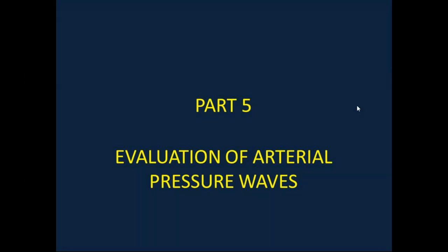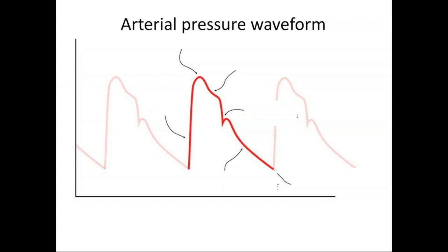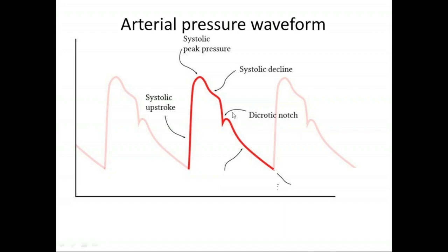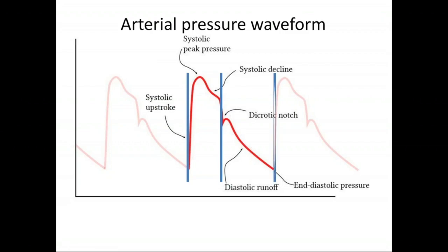Part 5 discusses evaluation of arterial pressure waveforms. The arterial pressure waveform is divided into systolic and diastolic parts. The systolic part has three components: the systolic upstroke, the systolic peak pressure — which is the highest number you can see on the screen — and then the systolic decline. After that comes the dicrotic notch, consistent with aortic valve closure, followed by the beginning of diastole. The lowest number of blood pressure visible on the screen is the diastolic pressure.